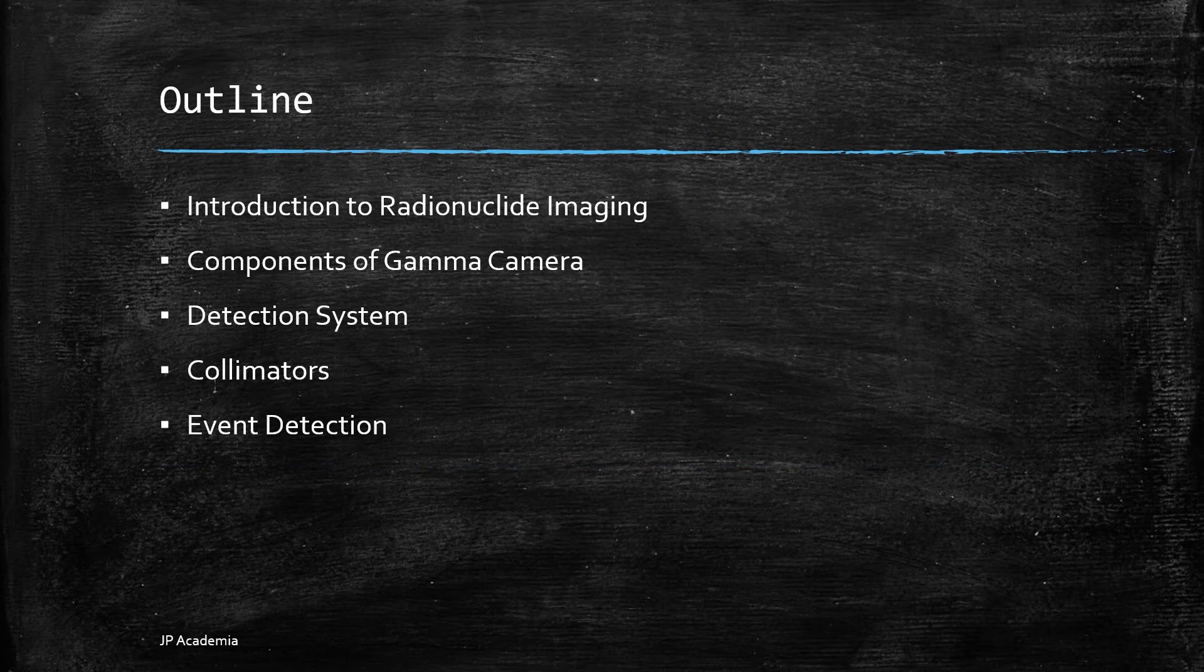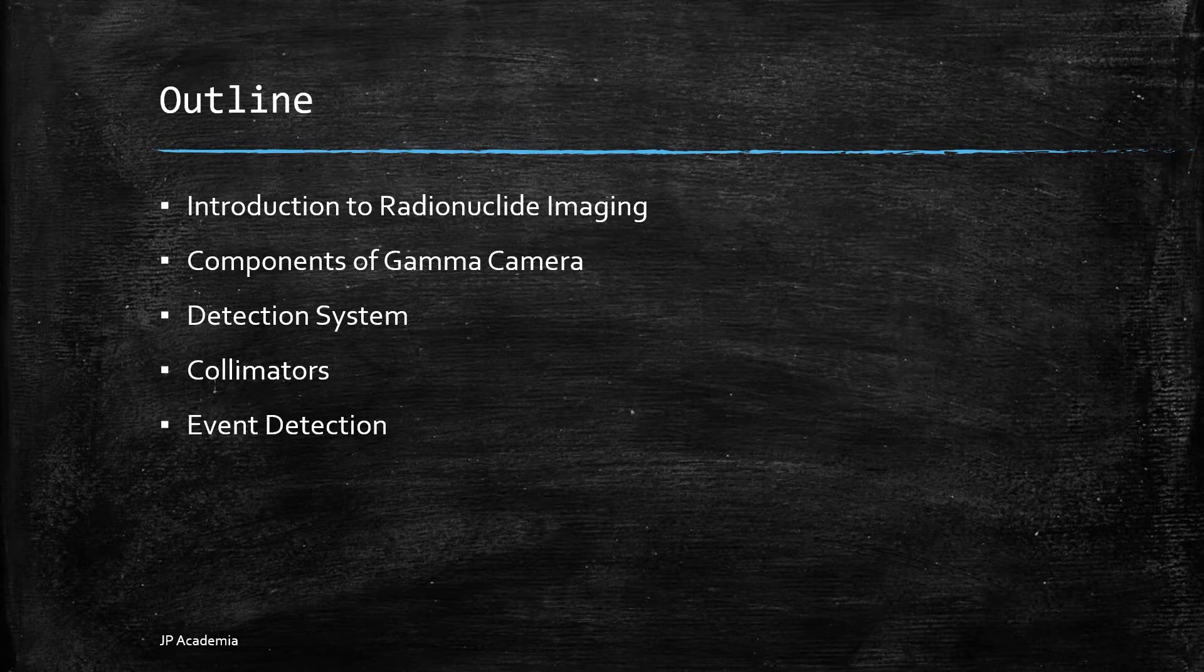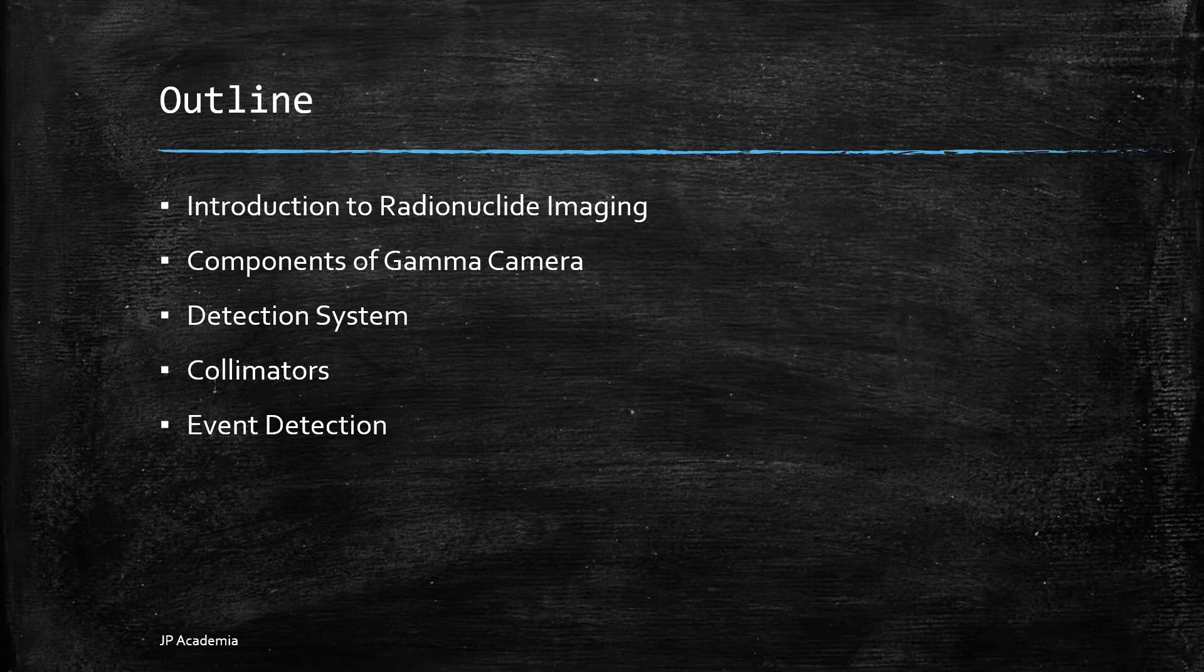This is the outline of this lecture. I will start with an introduction to radionuclide imaging, followed by the components of a gamma camera, then detection system, the collimators, and the different types of event detection.